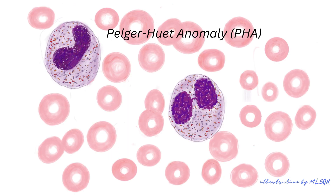We will also see a preponderance of bands, up to 50% or more, with nuclei of granulocytes resembling dumbbells. The Pelger-Huët anomaly is an autosomal dominant defect of a lamin beta receptor gene, but it is considered benign because the granulocytes are still capable of bacterial killing.